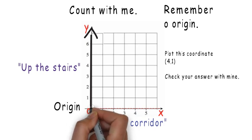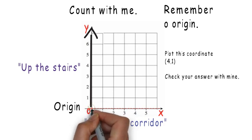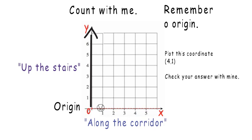Plot the point 4, 1. Go to the origin. Go along the corridor 4 steps, and then go up the stairs, 1.